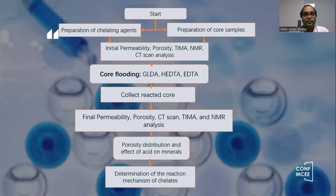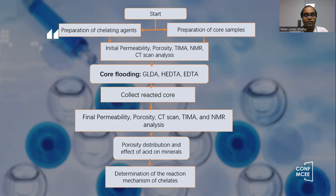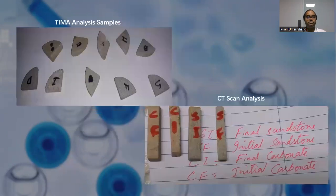This is the flow chart. We start the process between the chelating agents and the core sample. Then we do the initial permeability check, and then do the core flooding experiments. Then we get the collected core sample — the reacted core sample — then check the final permeability, porosity, mineralogy, do CT scan analysis, and finally determine the reaction mechanism of the chelating agent with the core sample.